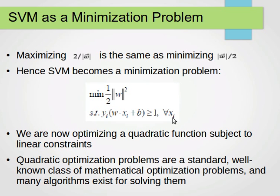We multiply by y_i because we can have either negative or positive classes. For any point, with its class and feature vector, that value will always be at least one. This problem becomes optimizing a quadratic function subject to linear constraints — a standard, well-known class of mathematical optimization problem with many existing algorithms for solving it.